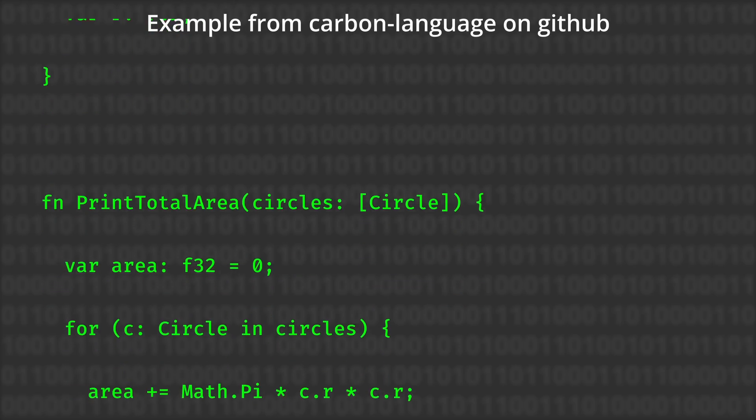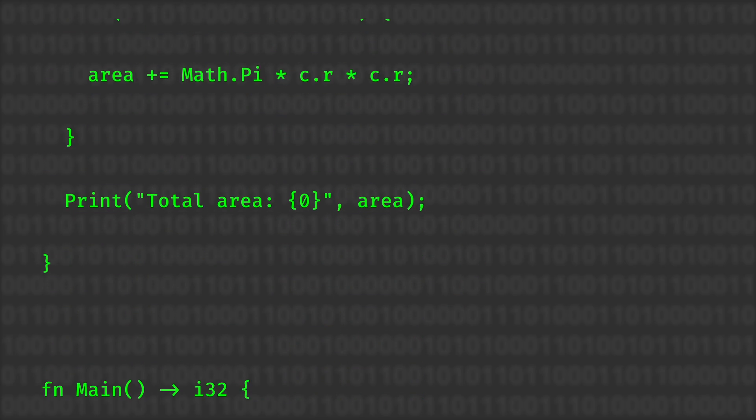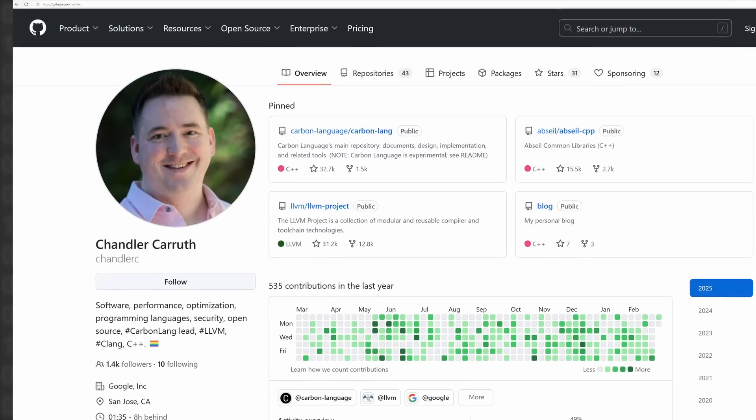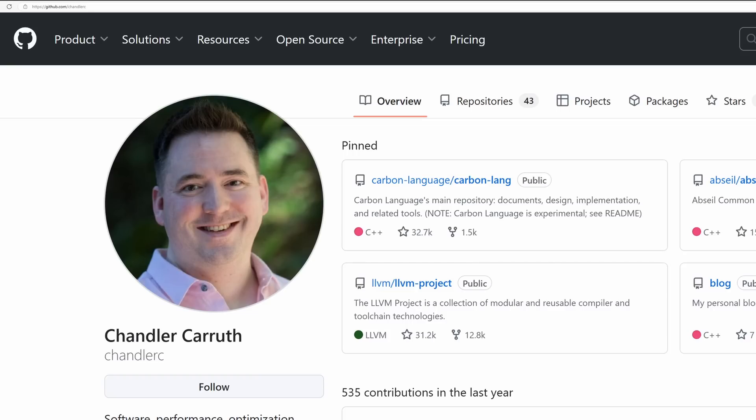Right now we can define it as an experimental project, meaning that everything I say in this video might not be valid tomorrow or in a year. However, I think it's still a nice opportunity to raise awareness about this new perspective programming language. Carbon was introduced by Chandler Carruth at the CPP North Conference held in Toronto in 2022. A minimum viable product is expected this year, and the first stable version is anticipated in 2027.